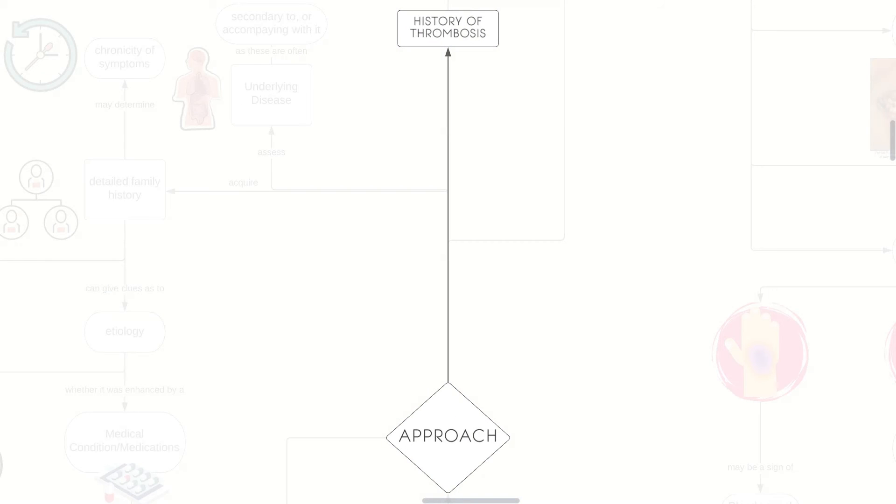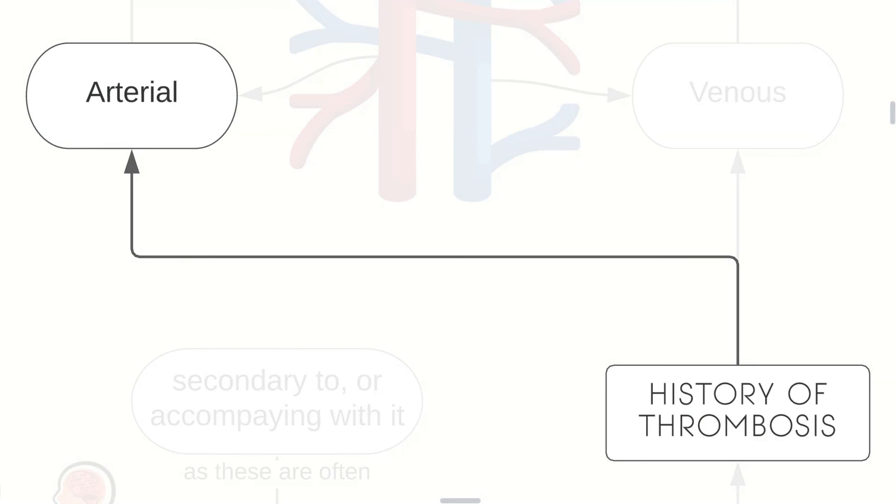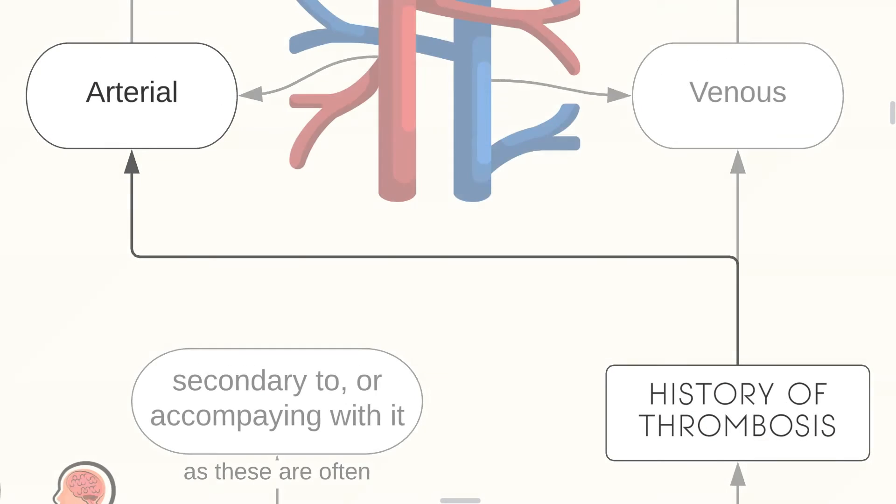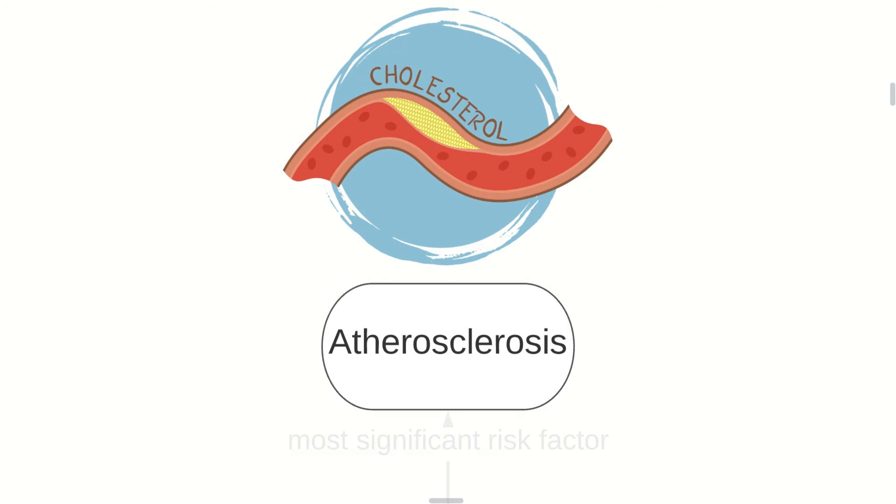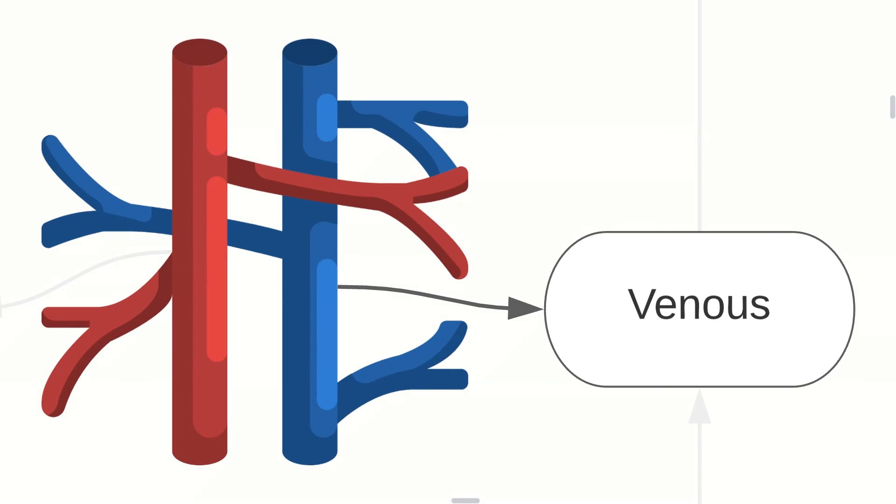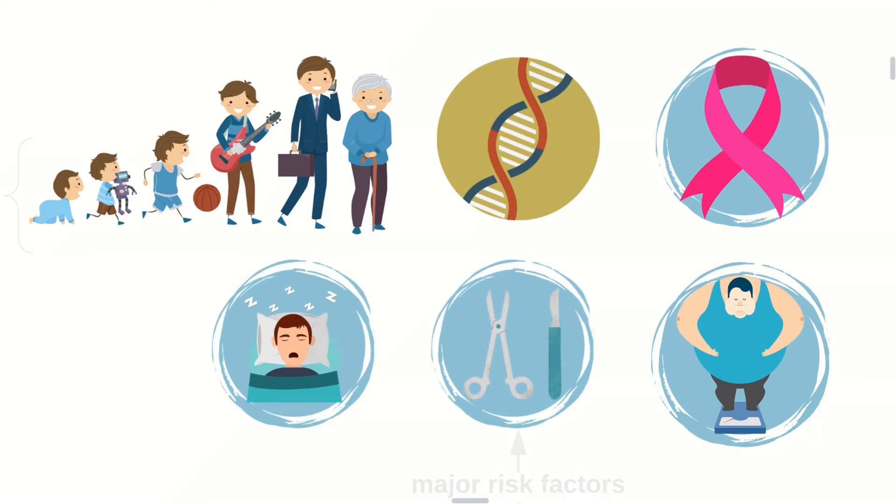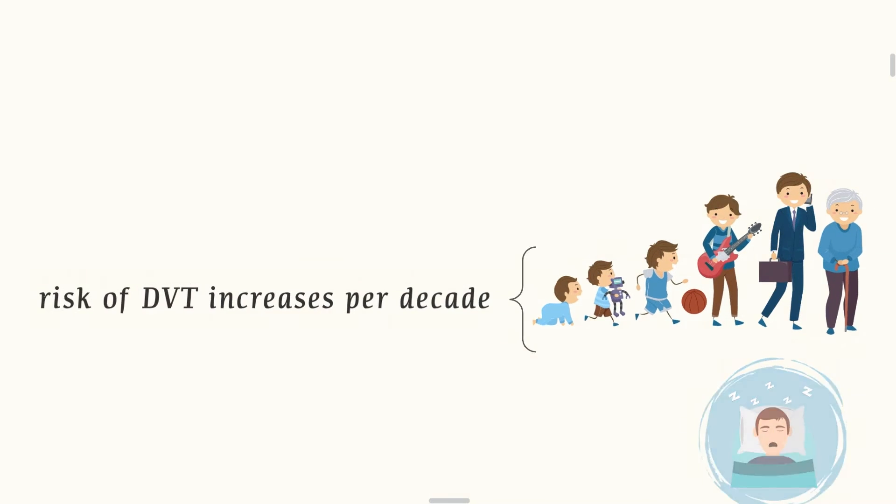Now let's talk about our approach for thrombosis. First there are two types: arterial thrombosis and venous thrombosis. For arterial, the most significant risk factor would be atherosclerosis, so it may be a good idea to reduce your fat intake. The second would be venous, which has major risk factors that are so many such as age,